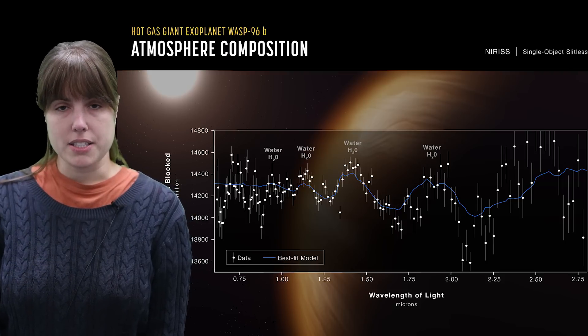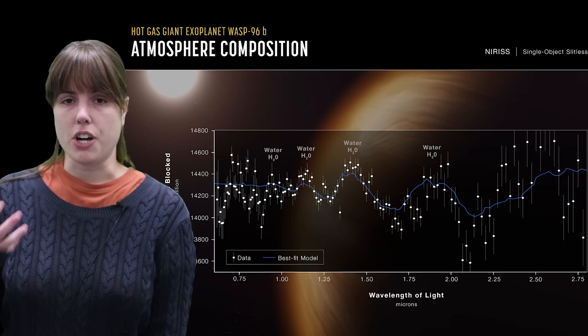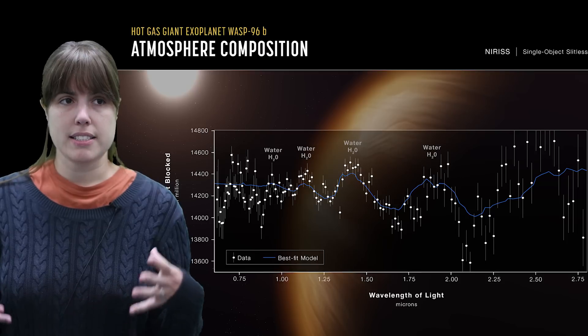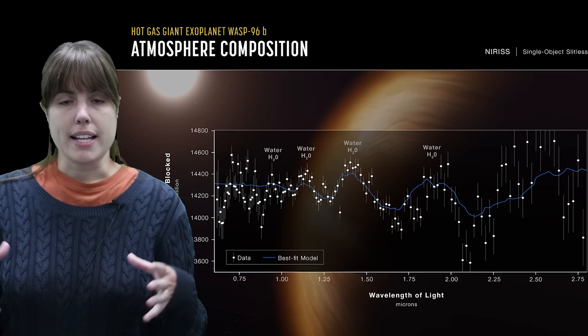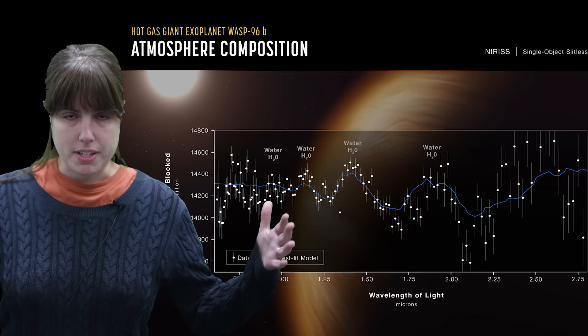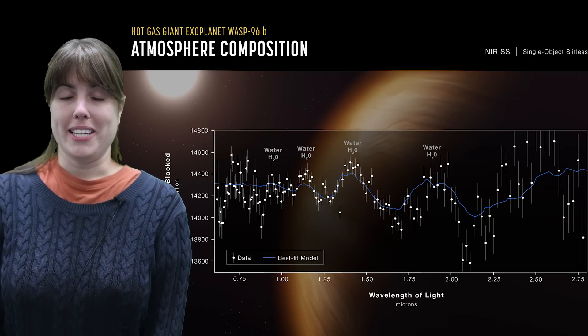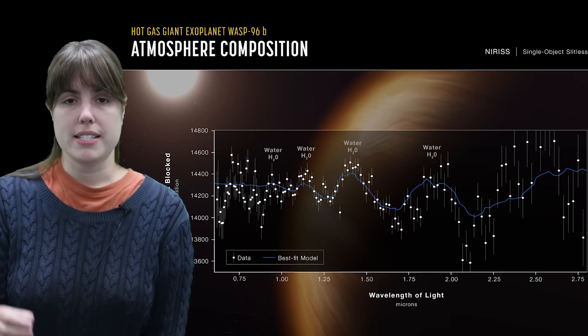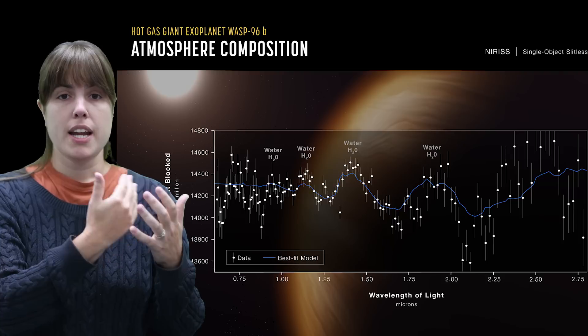It's an exoplanet, so it's a planet that is orbiting a star outside of our solar system. It's a giant, gas exoplanet, and its atmosphere is very puffy. So don't get too excited about moving to WASP-96b. This exoplanet is very, very close to the star. It's extremely hot.